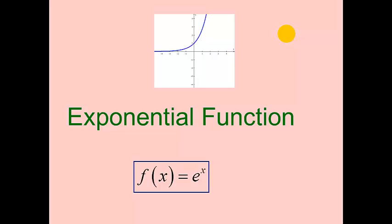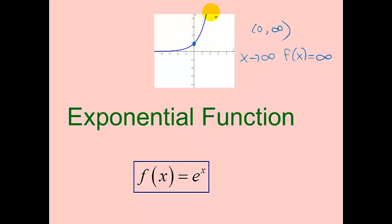For the exponential function e^x with the natural base e, we should automatically know this graph. We know that e to the zero is one, so this graph has a y-intercept there. The domain is all real numbers. The range is positive numbers, and there are no zeros because this function gets closer and closer to zero but never intersects the x-axis — it's always positive. As x approaches infinity, the function approaches infinity, but as x approaches negative infinity, the function value approaches zero.